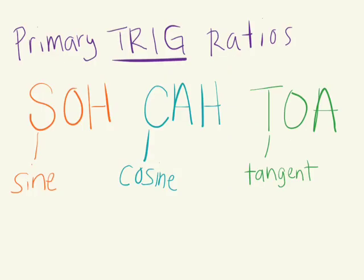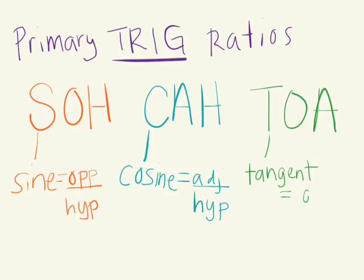There are three primary trig ratios: the sine ratio, the cosine ratio, and the tangent ratio. This acronym reminds you which ratios to use. The sine ratio refers to the opposite side length over the hypotenuse. The cosine ratio is adjacent over hypotenuse. The tangent ratio is equal to the opposite side length over the adjacent side.